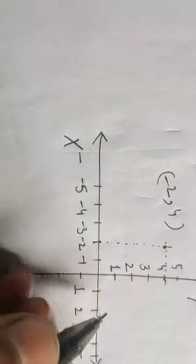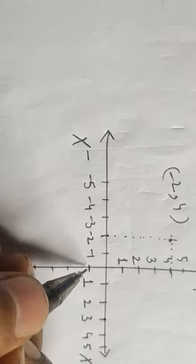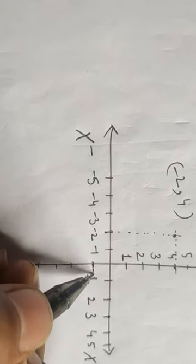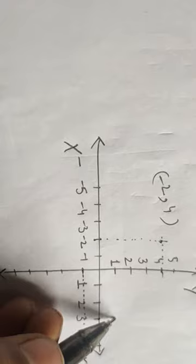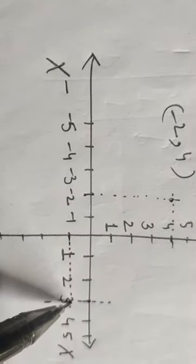Now we draw the point (3, -1). We cover 3 on the x-axis and negative 1 on the negative y-axis. Draw a line passing through -1 and a line passing through positive 3. The intersection of these lines gives us the point which represents the coordinates (3, -1).